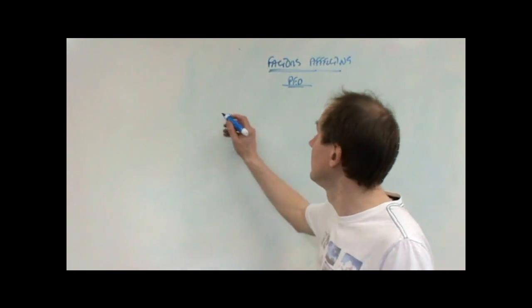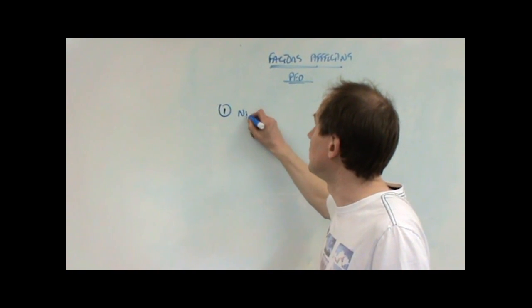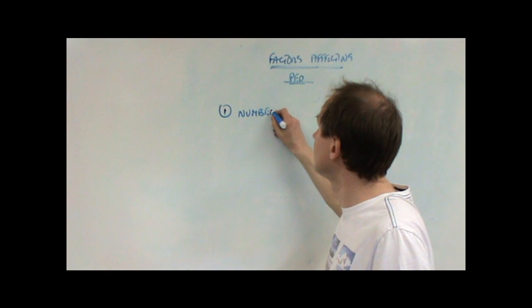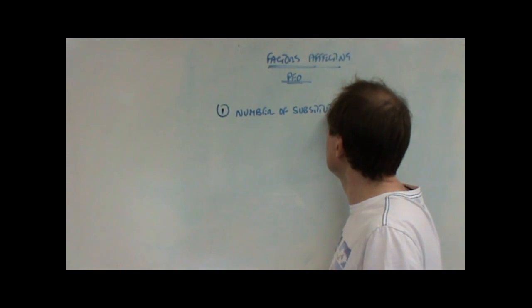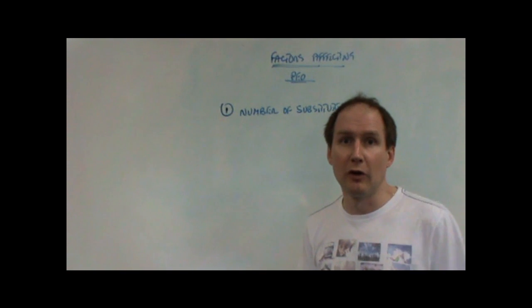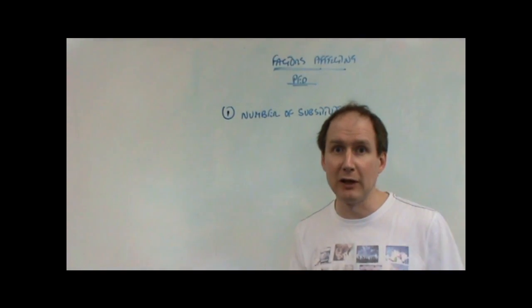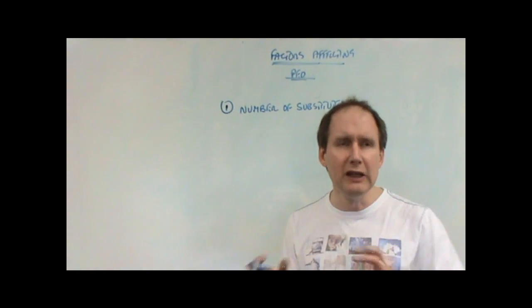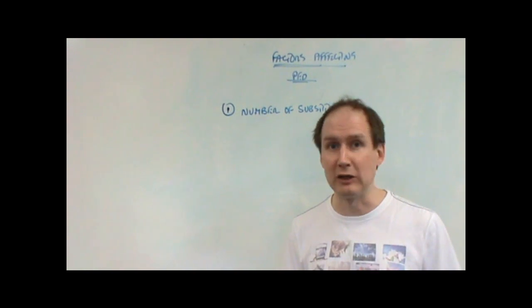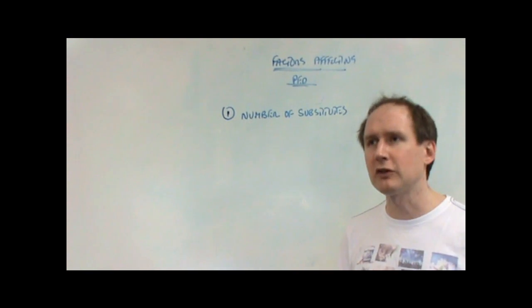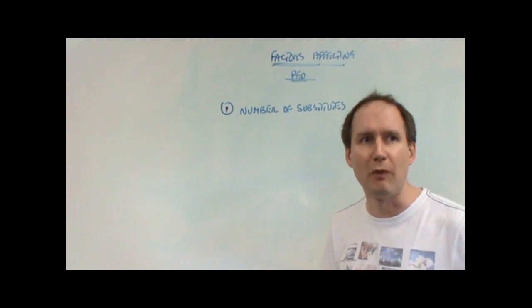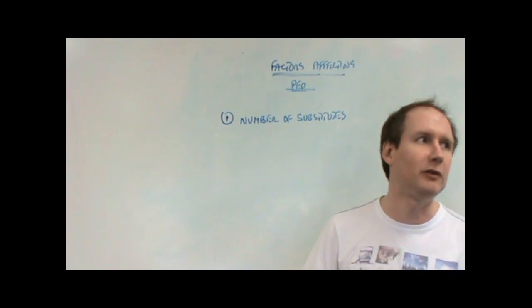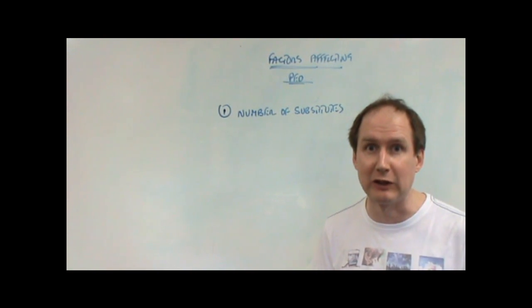First, the number of substitutes. If we take a Mars bar, there are a whole range of other chocolate-related products you could buy. You can have nuts, no nuts, milk chocolate, dark chocolate, white chocolate, caramel, no caramel—everything under the sun exists.